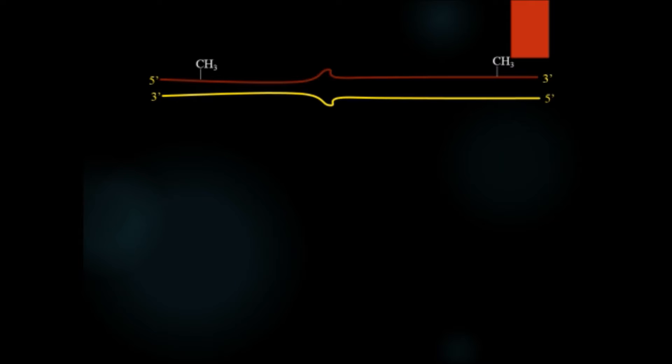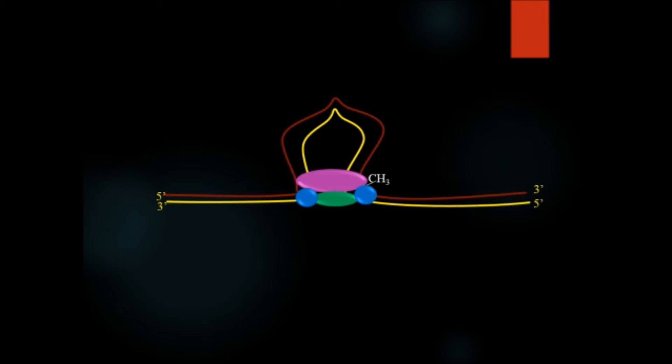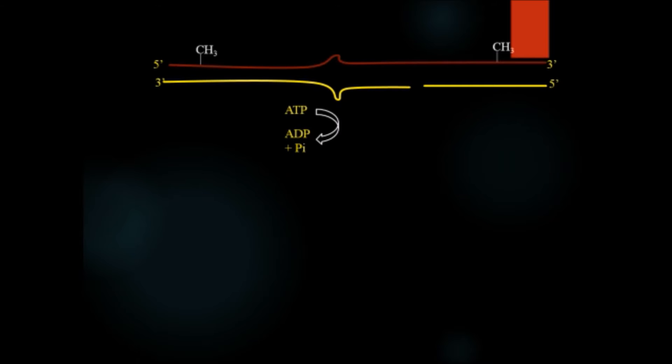Suppose there is a mismatch in DNA so that it will appear as a lesion. Then the two proteins MUT-S and MUT-L will bind at the lesion area with the help of ATP molecule. And then MUT-H protein will bind on one side with the methylated base and on the other side with the other methylated base. Then it will form a loop around the region where the lesion is present.